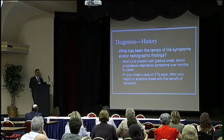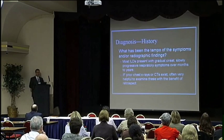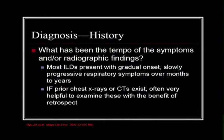It's important to consider the tempo of symptoms or radiographic findings. Most interstitial lung diseases present with gradual onset, slowly progressive respiratory symptoms over months to years. If prior chest x-rays or CT scans are available, it's very helpful to review them to gauge how fast changes have progressed — in retrospect, you can often see things on early x-rays that the radiologist may not have called at the time.